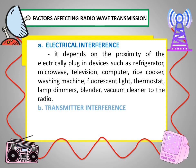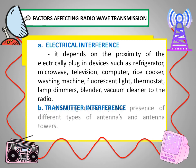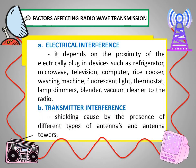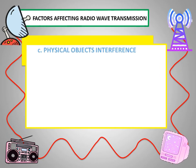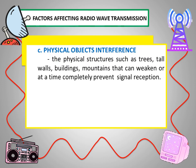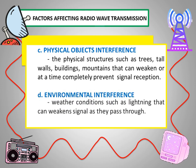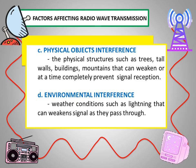Another is transmitter interference: shielding caused by the presence of different types of antennas and antenna towers. Physical structures such as trees, tall walls, buildings, and mountains can also weaken or completely prevent signal reception. And lastly, environmental interference: weather conditions such as lightning can weaken signals as they pass through.